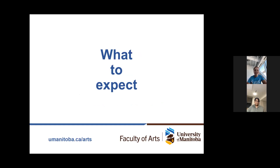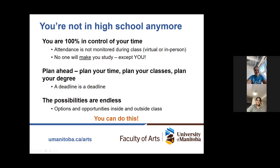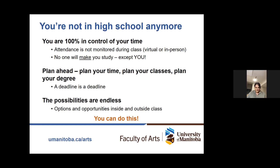So what will this look like? Well, the first thing I would like to talk about as a kind of reality check is that you're guaranteed not in high school anymore. You're 100% in control of your time. No one's monitoring you or sending updates to your parents. Your time management is up to you. You'll need to plan out your time, plan your classes in advance, plan your degree. There are people who can help you, but you must initiate it. And a stark reality that many students are not ready for is: a deadline is a deadline.